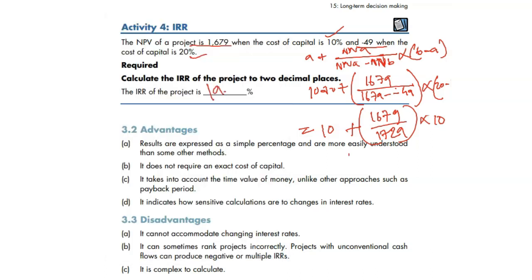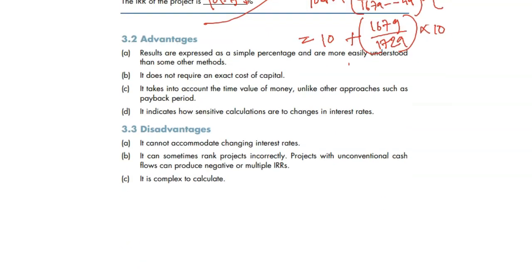So 19.71 percentage is our answer for IRR. There are some advantages and disadvantages. You can read and make your own notes. Advantages, it gives you simply percentage, which is easy. But sometimes it's difficult to calculate, complex. So these are the disadvantages.